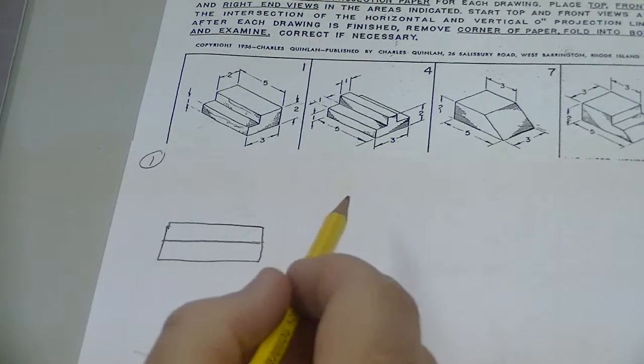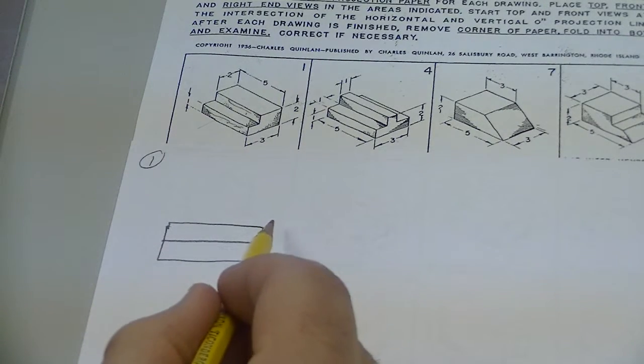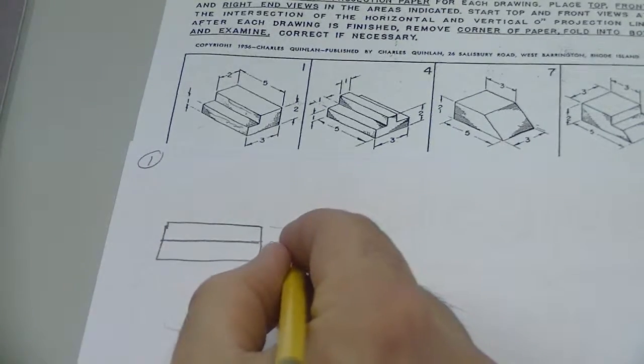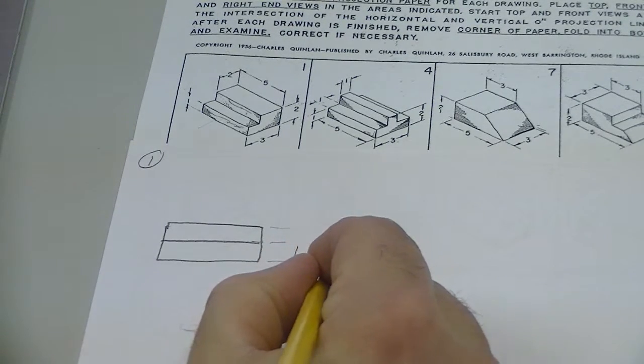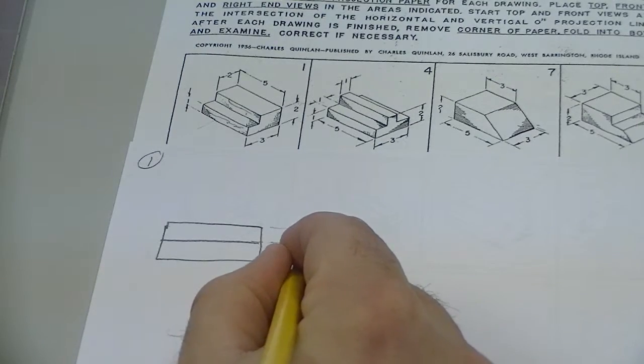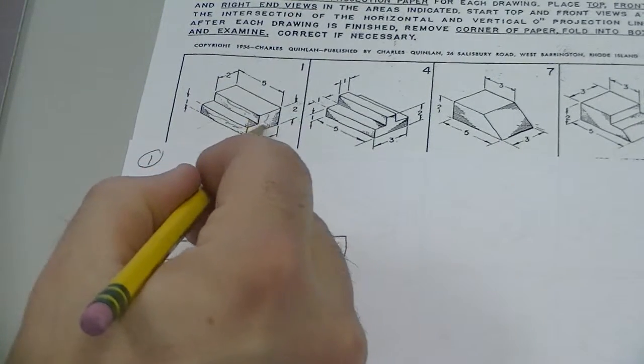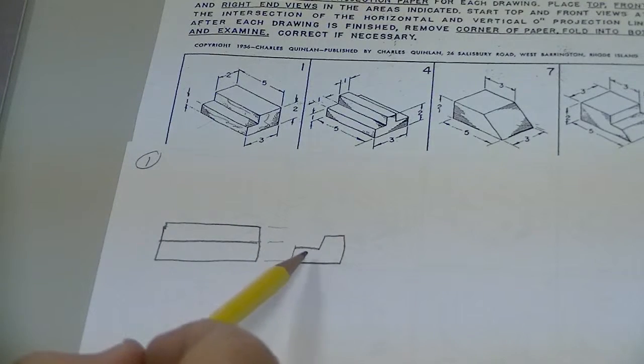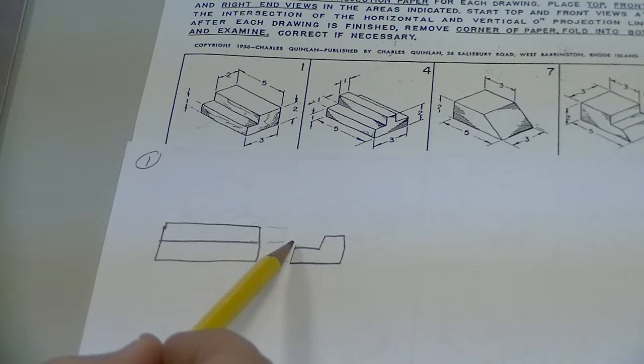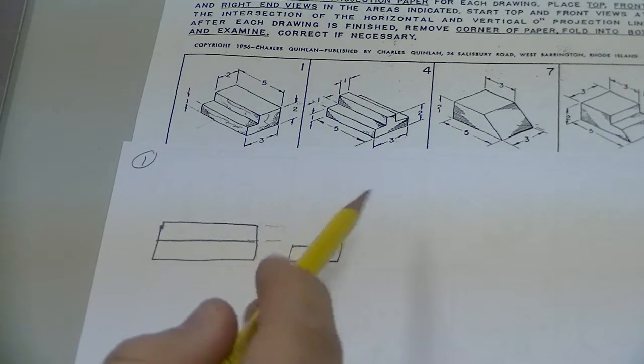From here you can either do the top view or the right side view. I would like to see construction lines, so I'm going to bring a very lightly drawn construction line over from every intersection point. Then I'm going to draw the right side view. Here's your right side view. Notice my right side view lines up with the front view - it's not taller or shorter. This level lines up with that. That's why these construction lines help line that up.